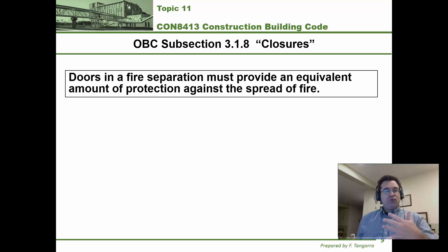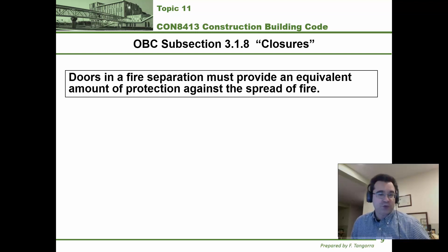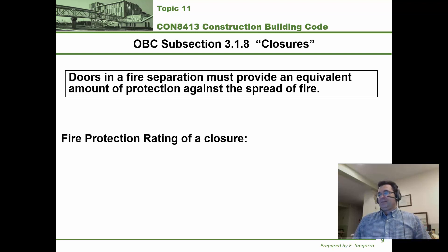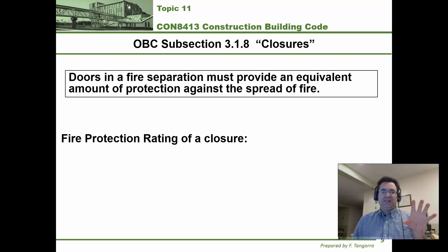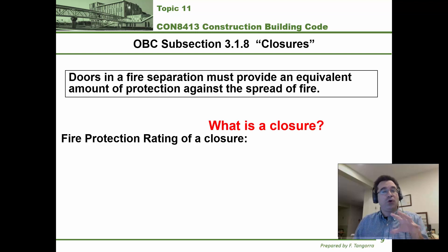Once we go through a suite into a public corridor, we have to go through a door. A door in the building code must offer the same equivalent amount of protection as the wall it's in. The fire protection rating of a closure must meet certain requirements. 'Closure' is basically what the building code calls doors, windows, and that kind of thing.